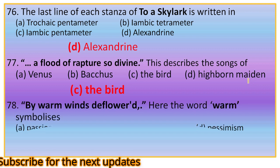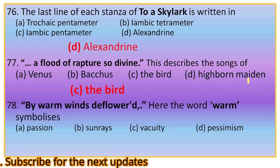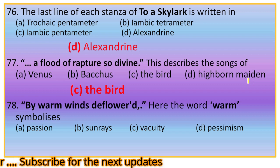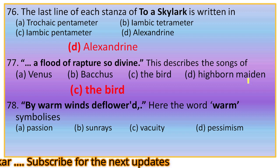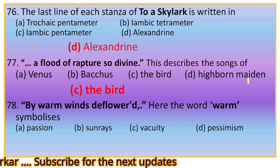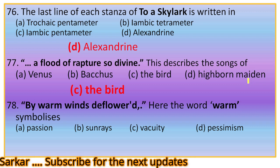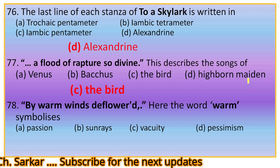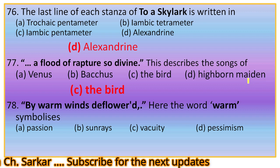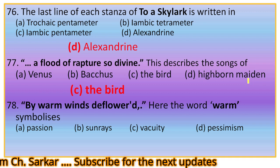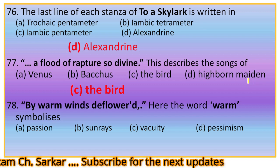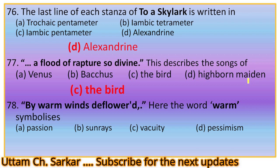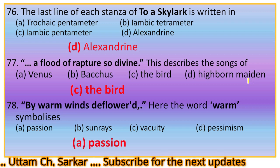Question 78: 'By warm winds deflowered.' Here the word 'warm' symbolizes — options: passion, sunrise, vacuity, pessimism. This is from stanza 11, where the rose is impliedly compared to a lady and the warm wind is compared to a male lover. So the word 'warm' means passionate. The right option is A, passion.